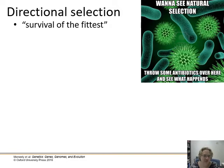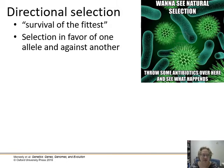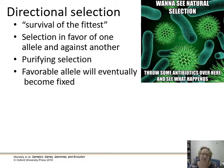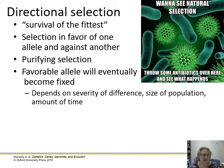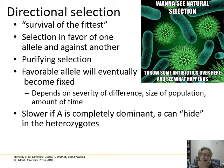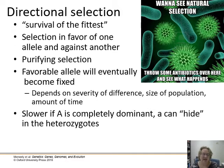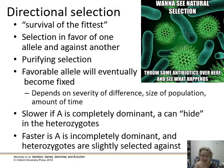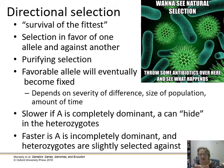Directional selection — what people call survival of the fittest — is selection in favor of one allele against another, also called purifying selection. That favorable allele could eventually become fixed, depending on the severity of the fitness difference, the size of the population, and the amount of time. It could reverse if the environment changes. Fixation is slower when the dominant gene is completely dominant because the recessive gene can hide in heterozygotes with no penalty. But with incomplete dominance, fixation is faster because heterozygotes are slightly selected against.